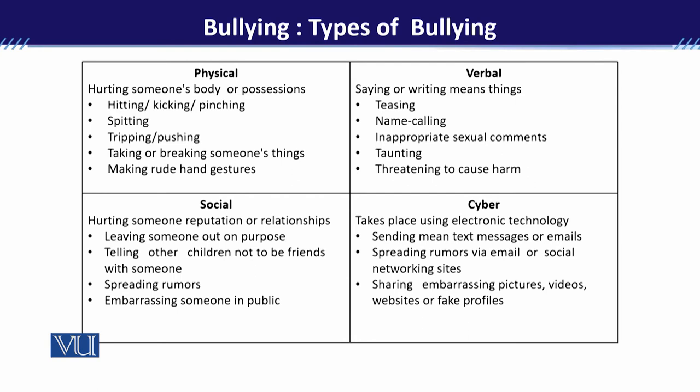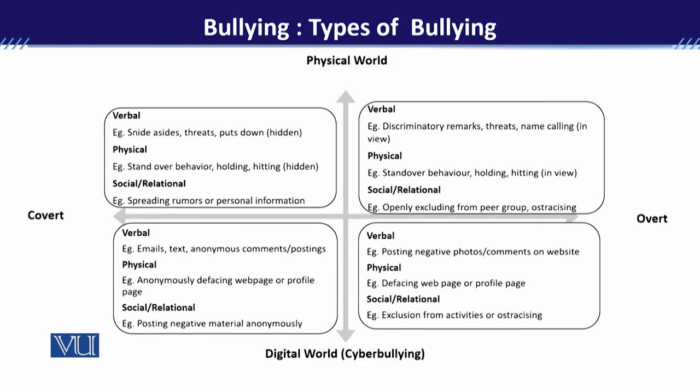Cyber bullying is becoming a very major cause of suicide among adolescents and teenagers today. Cyber bullying can be said to be very fatal or lethal for adolescent-age individuals. Bullying also occurs at the overt level and the covert level. When I say covert, it means it is happening in a hidden form, and when I say overt, it means the behavior is observable and people can see it.